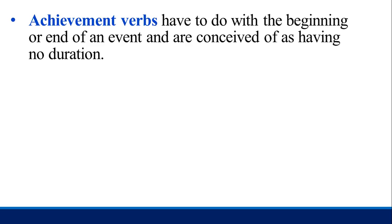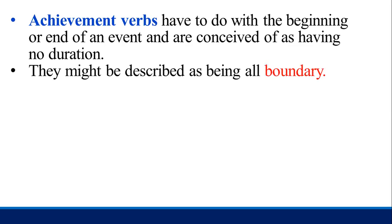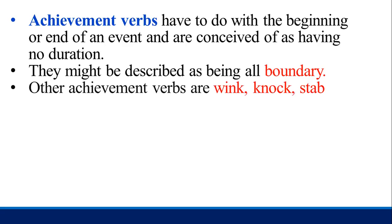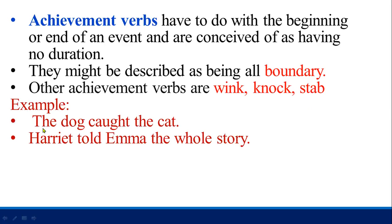Achievement verbs have to do with the beginning or end of an event, or are conceived as having no duration — they might be described as being all boundary. Other achievement verbs are: wink, knock, and stab. For example: 'The dog caught the cat' and 'Harry told Emma the whole story' — there are no time boundaries.